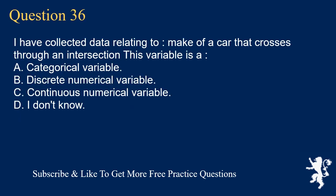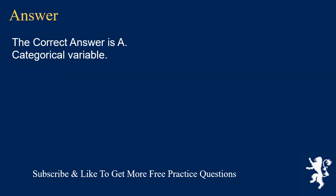Question 36: I have collected data relating to the make of a car that crosses through an intersection. This variable is A. categorical variable, B. discrete numerical variable, C. continuous numerical variable, D. I don't know. The correct answer is A, categorical variable.